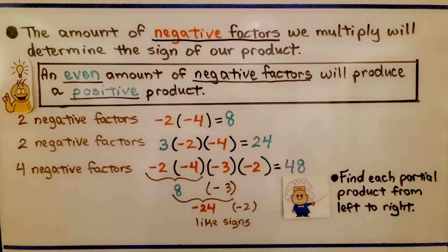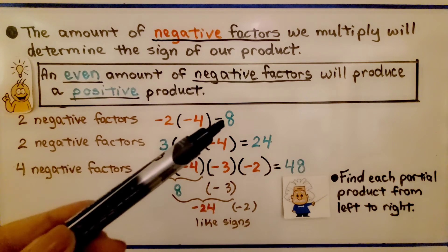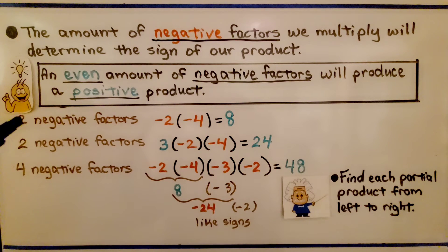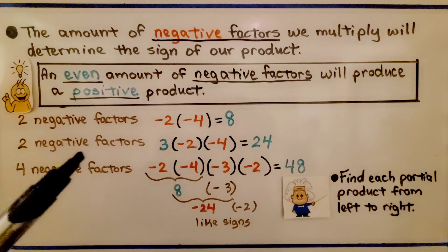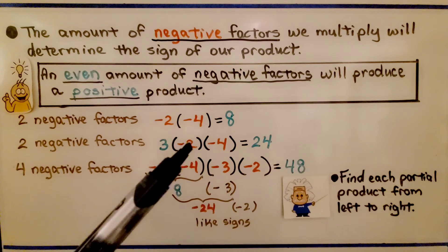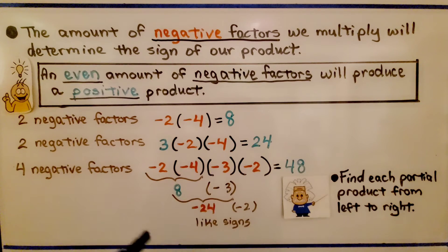Here are a couple of very cool rules. The amount of negative factors we multiply will determine the sign of our product. An even amount of negative factors will produce a positive product. Two negatives are like signs, so the product is positive — two is an even number. Even with one positive mixed in, if there are two negative factors, we get a positive product. With four negative factors, we also get a positive product.